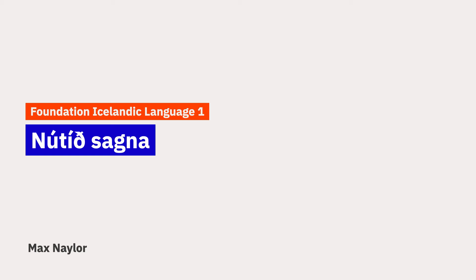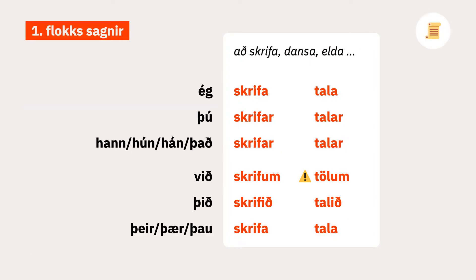Nú tíð sagna — Simple present tense. This slide shows how to form the simple present tense of class 1 verbs. When you learn a new verb, you need to learn the verb class or group to know how to conjugate it.